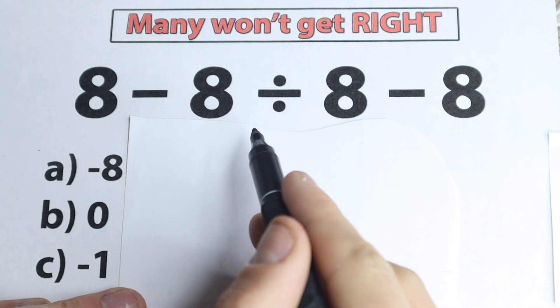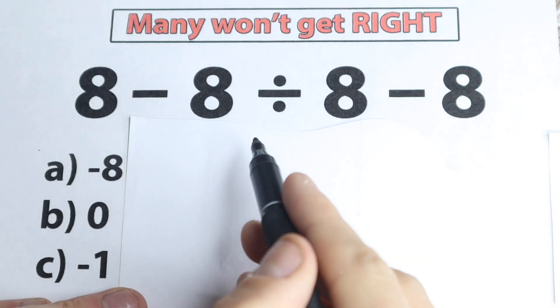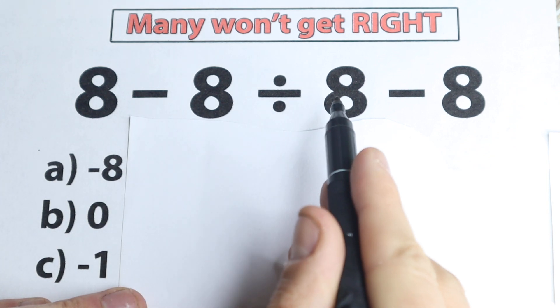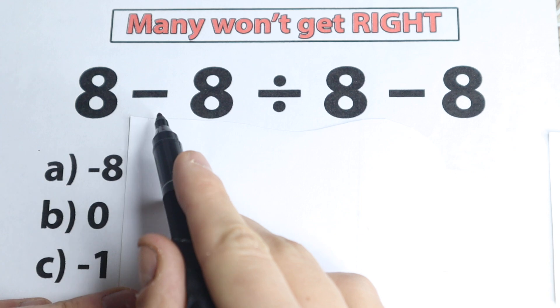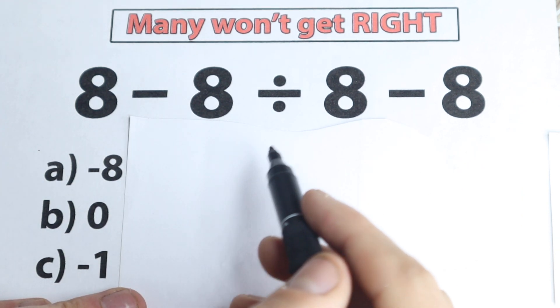And in this video let's try to solve this interesting question. So as you can see nothing hard on the first side. We have 8 minus 8 divided by 8 minus 8, so it's not like a huge complicated expression. We have only subtraction, we have only division, so what is the correct answer, what do you think?